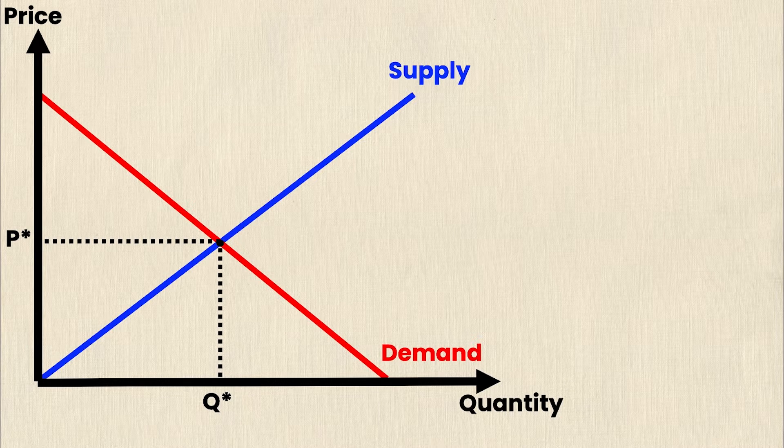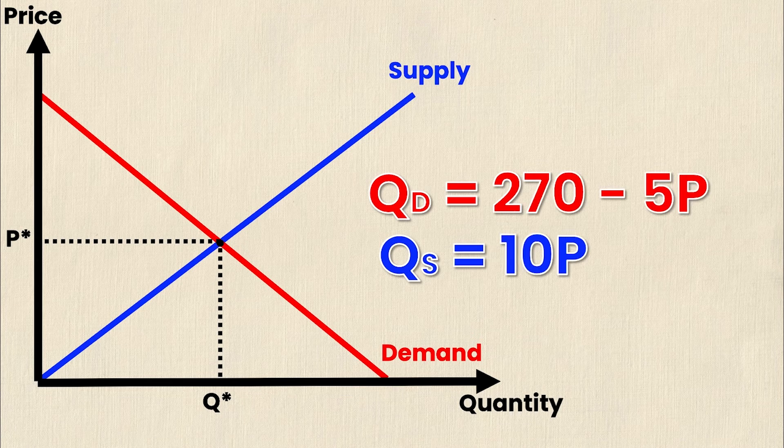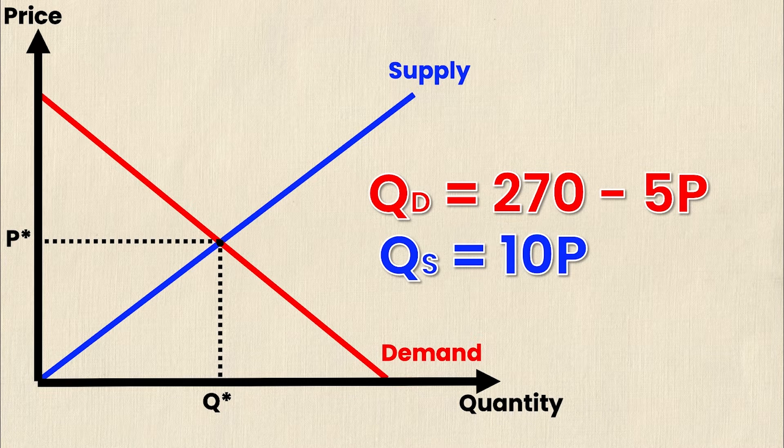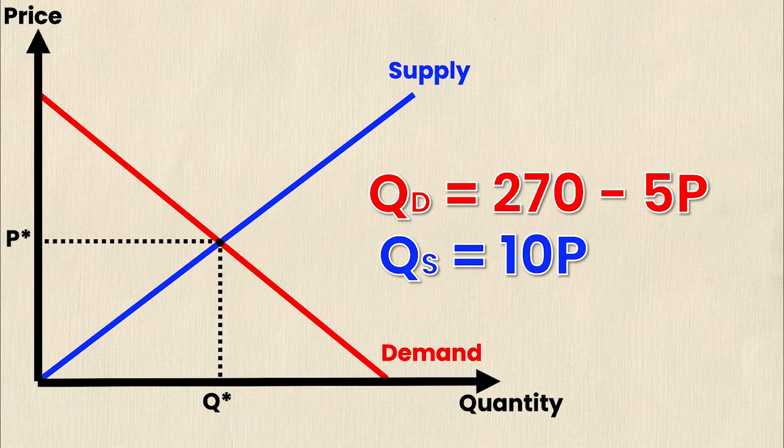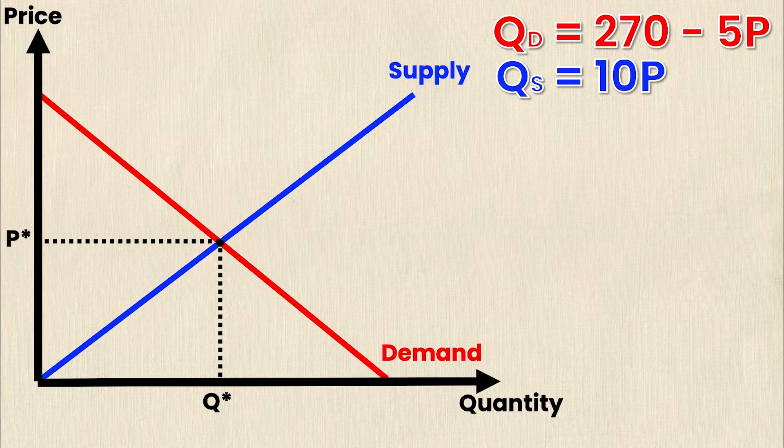Now the information that we need to calculate actual values are the supply and demand equations. In this case I'll use the same supply and demand equations I did in my other video. Quantity demanded is equal to 270 minus 5P and the supply equation is quantity supplied equals 10P. We'll put these up to the side and then use these to solve for deadweight loss.